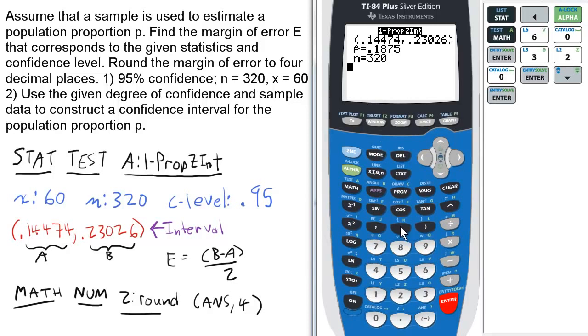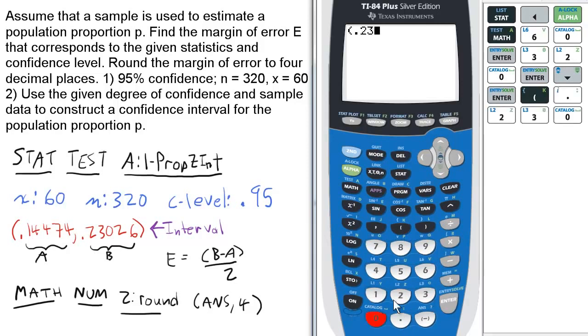To enter it, make sure we open parentheses, enter the upper value first, which is 0.23026. From that, subtract the lower value of the interval, which is 0.14474.